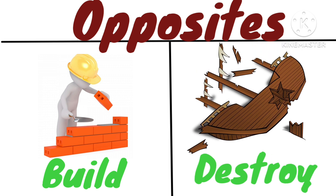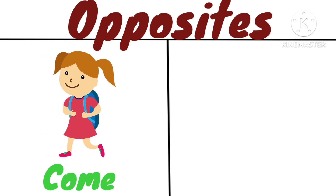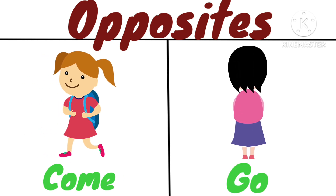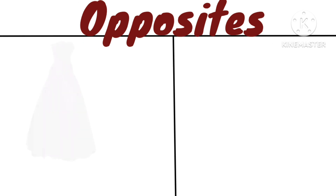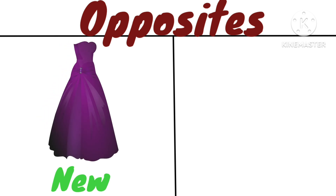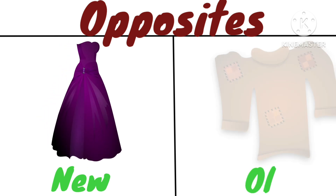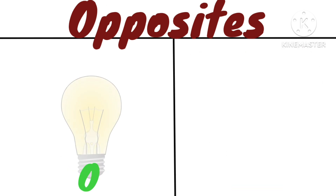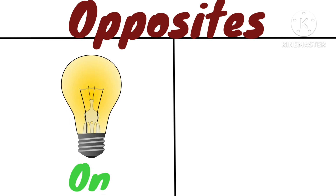Opposite of birth is death — birth of a child, and death of a person. Opposite of build is destroy. The building is being built, and the building was destroyed. Opposite of come is go — the girl is coming, and the girl is going.